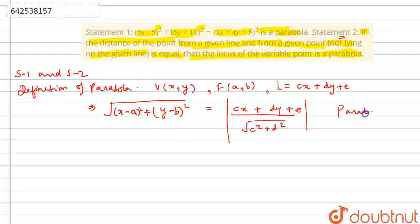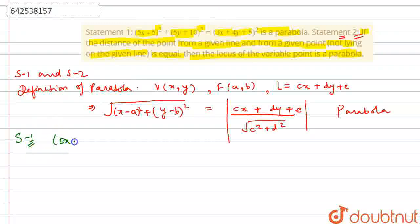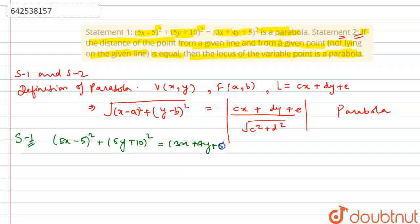So Statement 2 is correct because it is the definition of a parabola and is universally valid. Now looking at Statement 1, the given locus is (5x − 5)² + (5y + 10)² = (3x + 4y + 5)².